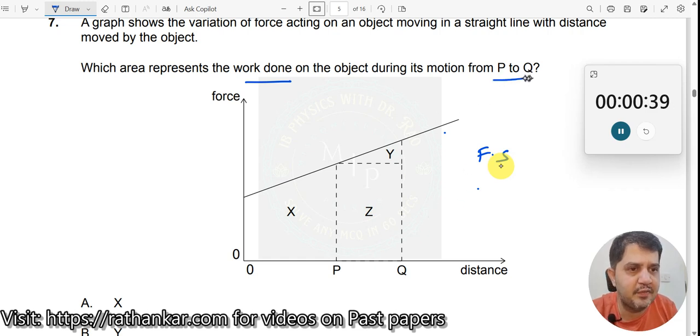But he is asking only from P to Q. Which one should I use, should I use Y, should I use Z? X definitely is not the answer because if I take X, it will start from O itself.